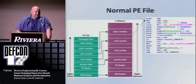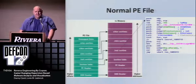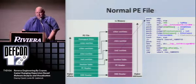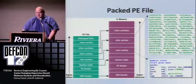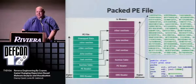The way this looks: you have a normal unpacked PE file, you apply a packer to it, and you get the compressed or obfuscated code with a small decoder stub.